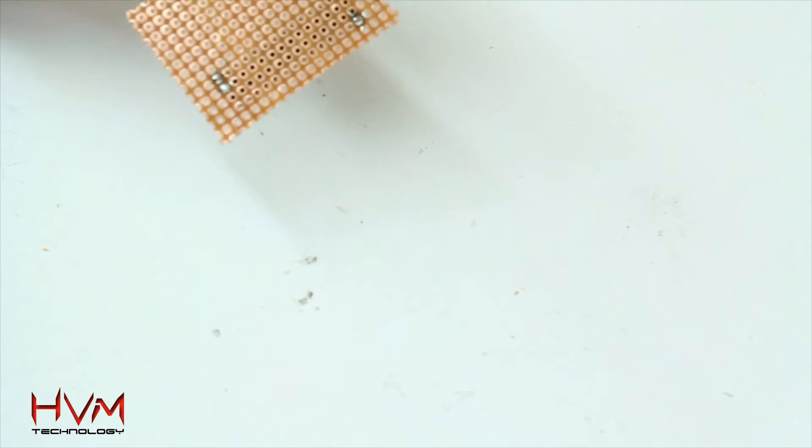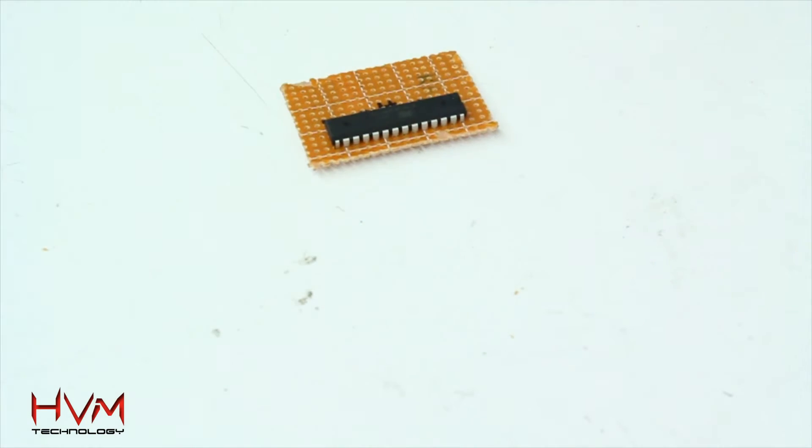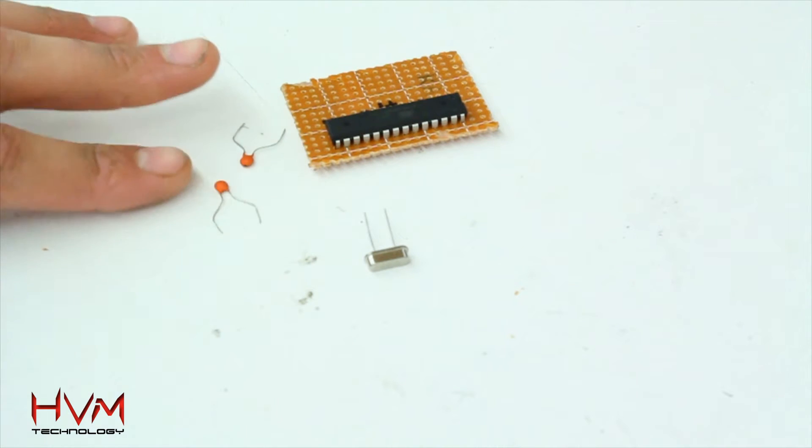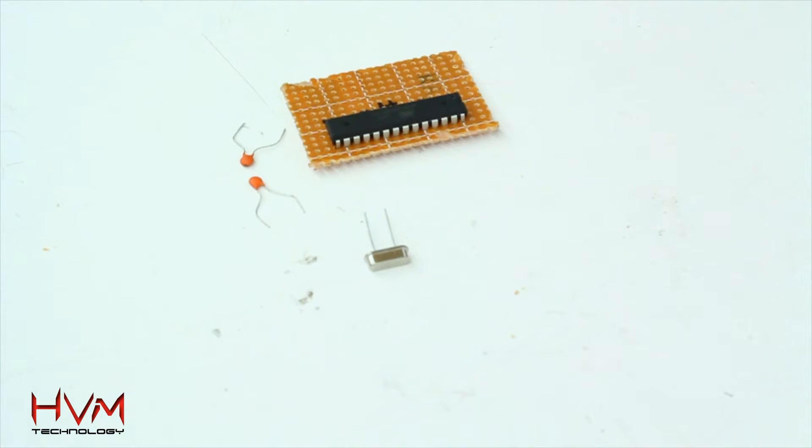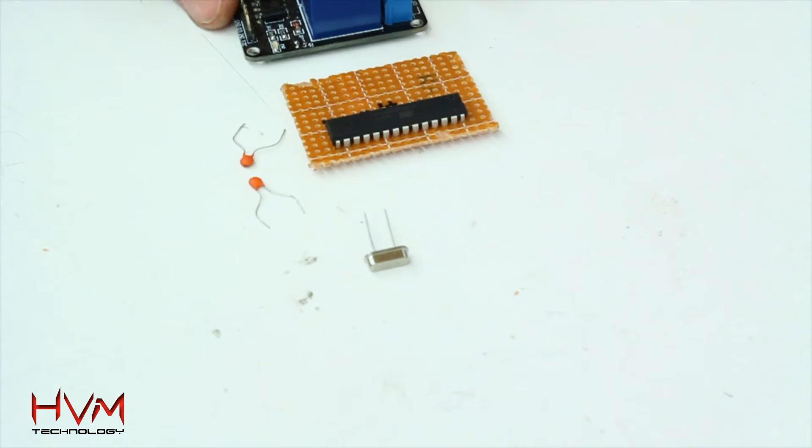So I've just tacked that IC on there. I also need to add some extra pieces. I've got a 16 megahertz crystal and two 22 pF capacitors and that should do it. And then I'm just going to attach that onto the side of my relay and we'll see if it works.